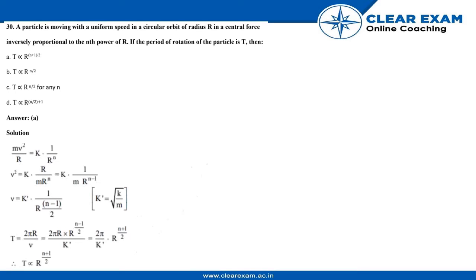Hey guys, now we are going to solve question number 30. Let's see what the question says. A particle is moving with uniform speed in a circular orbit of radius r. A central force inversely proportional to the inner power of r.